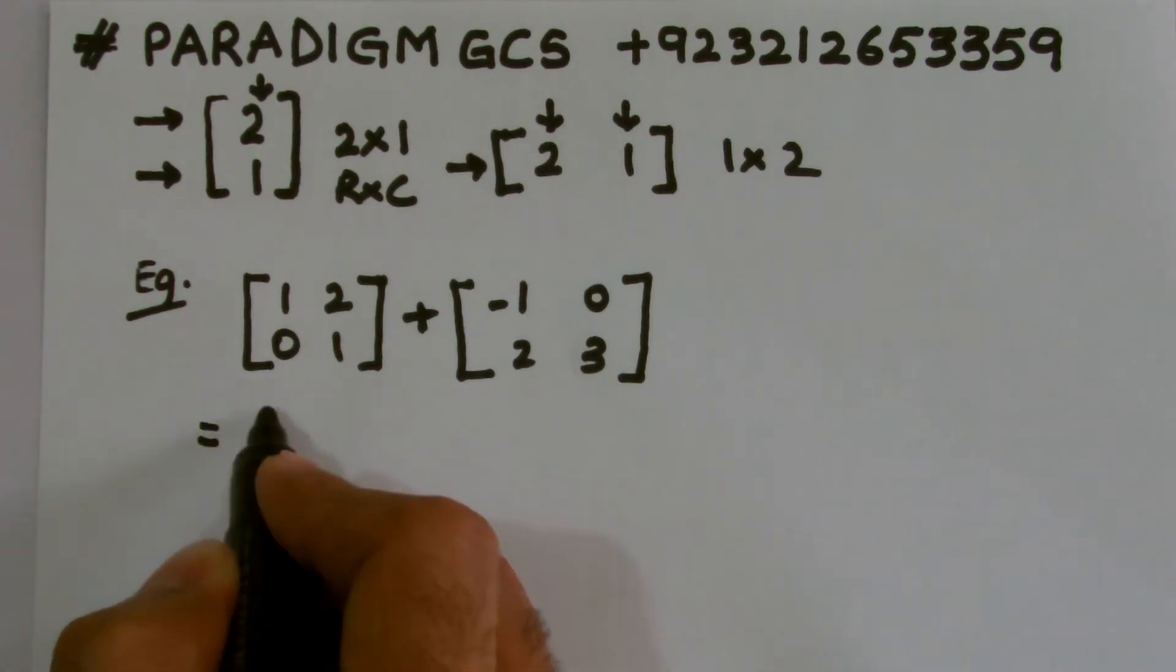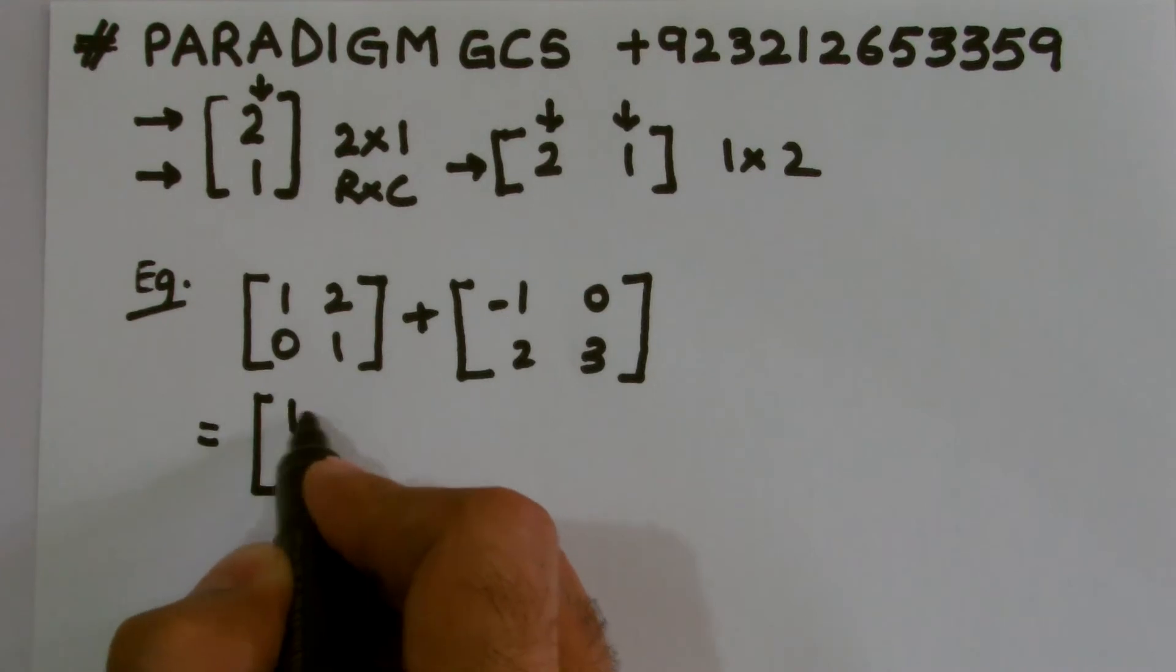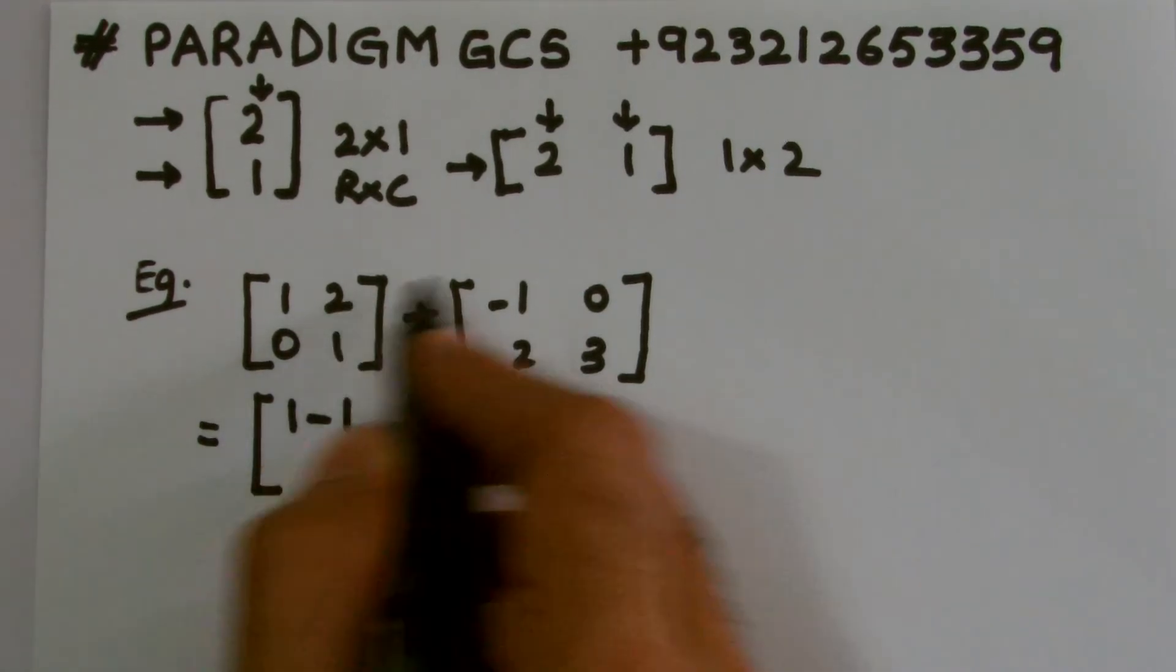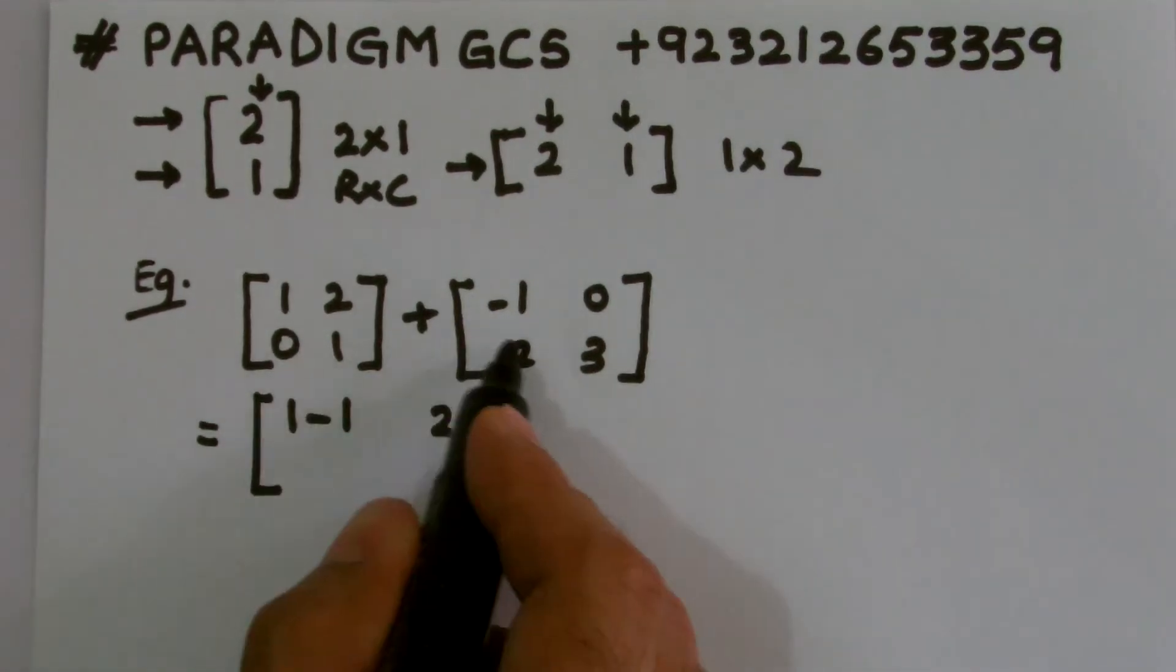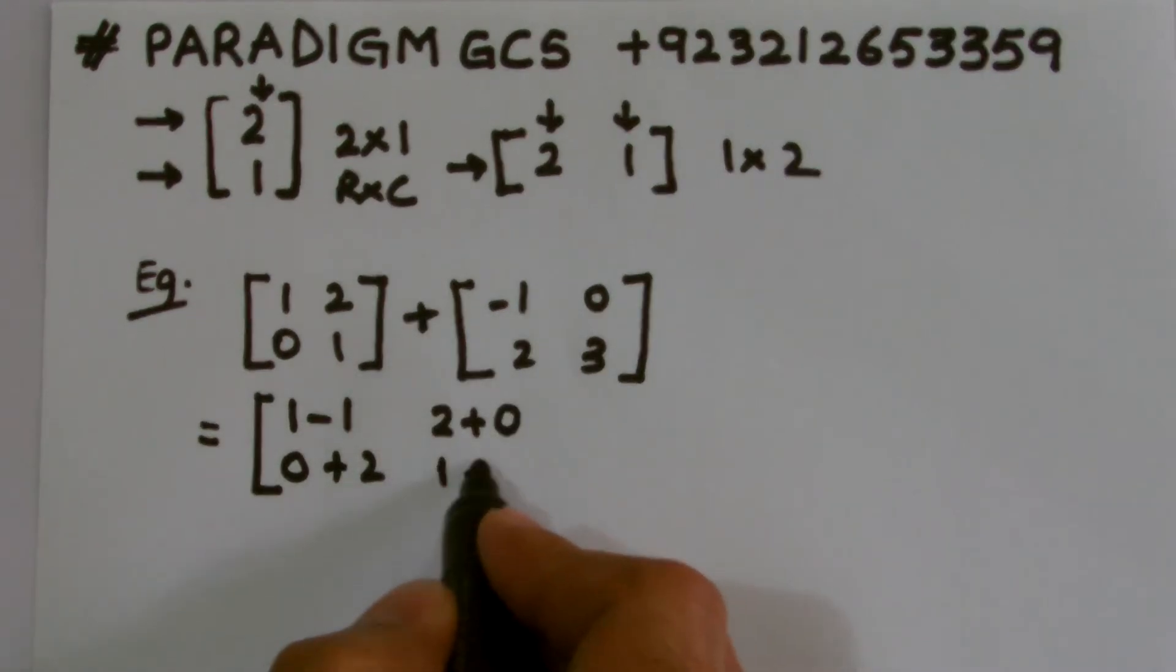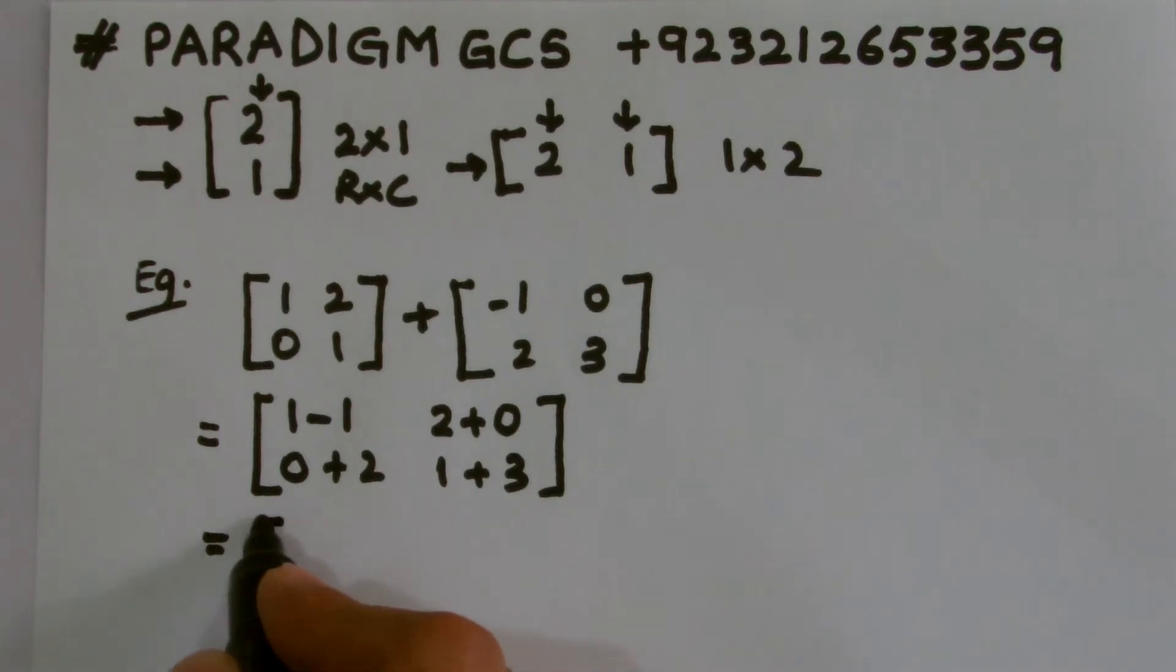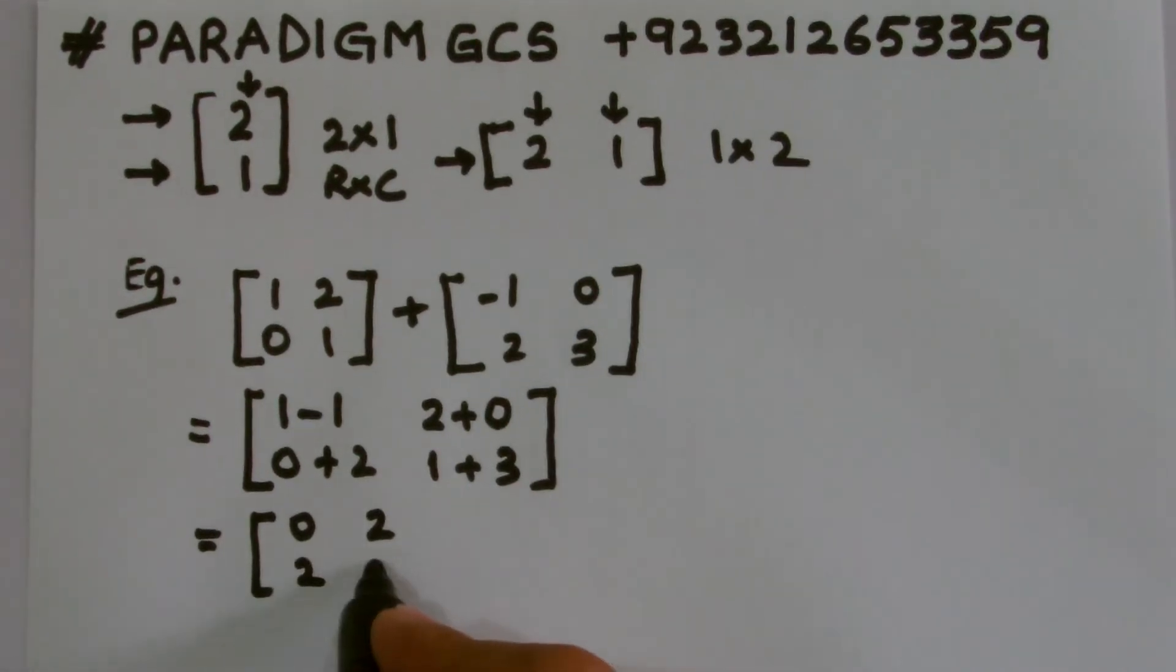So that's why we need to have identical matrices and then only we can add. This becomes 1 add minus 1, this is 1 minus 1. 2 add 0, 0 add 2, then 1 add 3. And as a result, I get 0, 2, 2, 4.